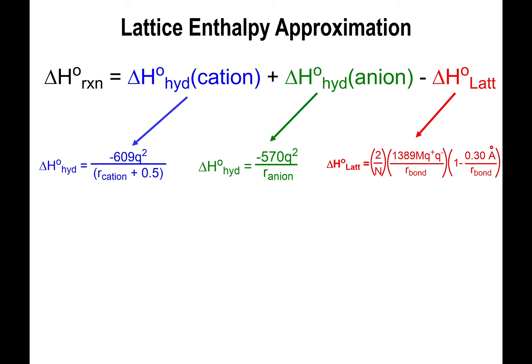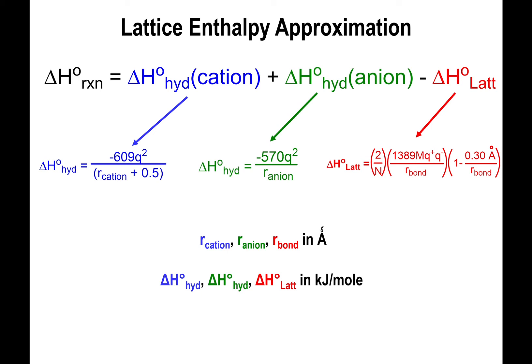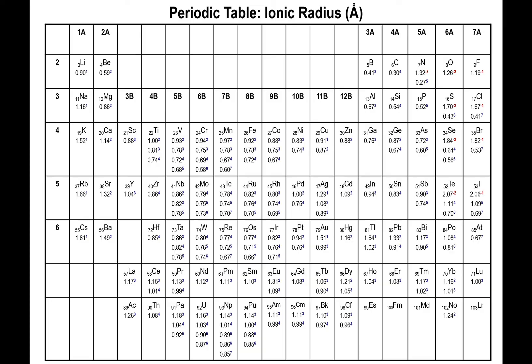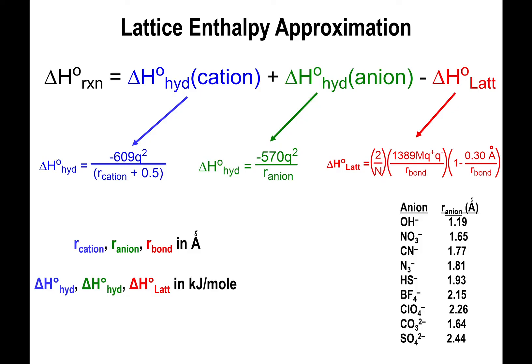The lattice enthalpy uses the Kapustinskii equation as its approximation. What you need to solve all three of these equations are the ionic radii of the cation and the anion along with their charges. All radii must be in angstroms — if not given in angstroms, you'll need to convert them before using the equations. As long as everything is in angstroms, all delta H values calculated will be in kilojoules per mole.